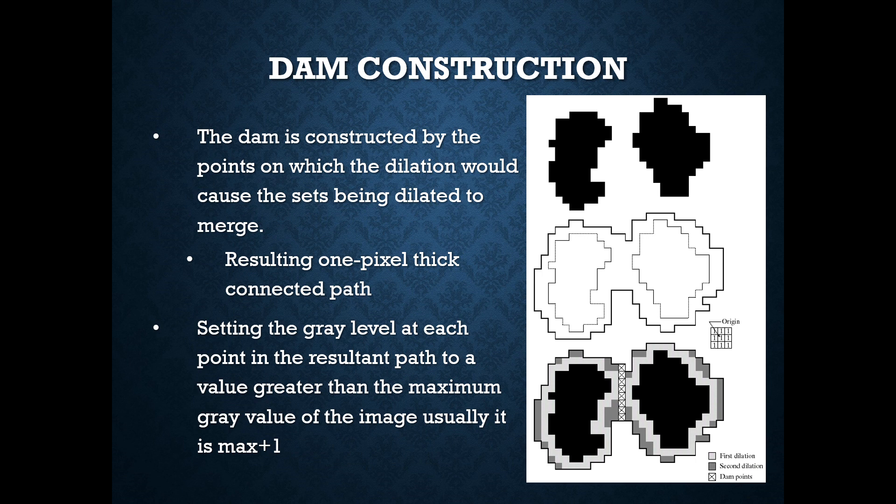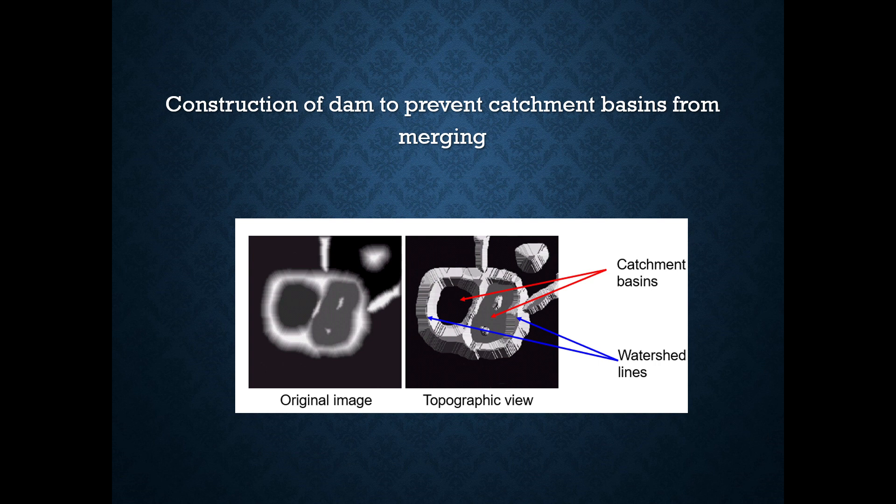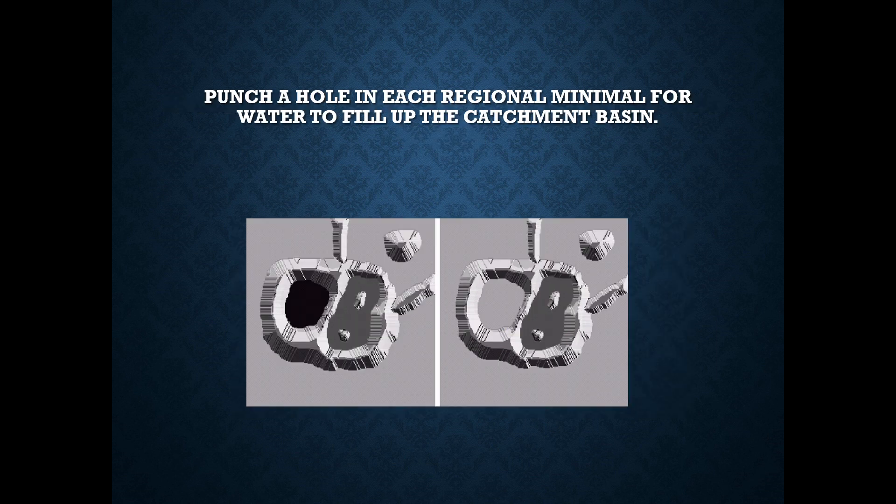Resulting one pixel thick connected path. Setting the gray level at each point in the resulted path to a value greater than the maximum gray value of the image, that is, it is usually maximum value plus one. We construct a dam to prevent catchment basins from merging. It is the original image and it is the topographic view of that image. The hollow ones are the catchment basins and the edge ones are the watershed lines.